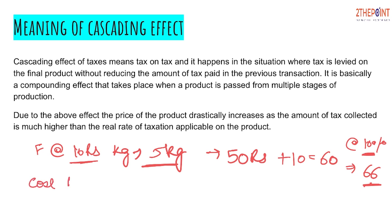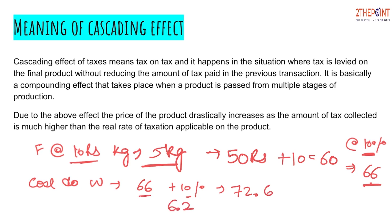Now when this wholesaler sells it to the retailer, they will again levy a tax of 10%, which makes the cost 72.6 rupees — because 10% of 66 is 6.6 rupees, so 66 plus 6.6 is 72.6 rupees. If you see, this 10% tax levied on 66 rupees includes the 6 rupees that was already included as tax in the previous transaction. So this is the case of tax on tax.